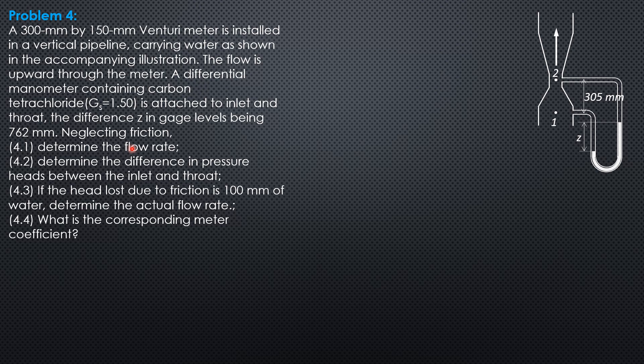So the formula for direct formula for theoretical discharge is given by pi over 4 diameter 1 to the fourth minus diameter 2 to the fourth. So that's the theoretical discharge formula: pi over 4 diameter 1 square diameter 2 square square root of 2gh over diameter 1 to the fourth minus diameter 2 to the fourth.